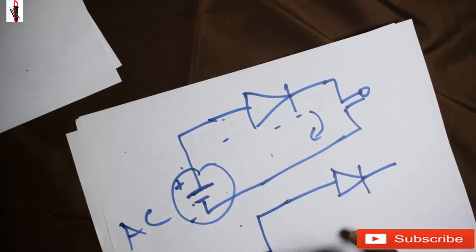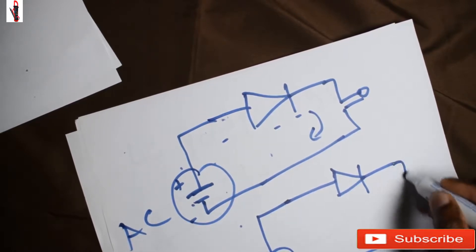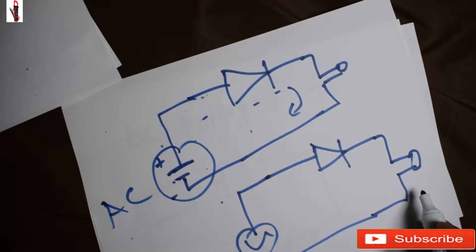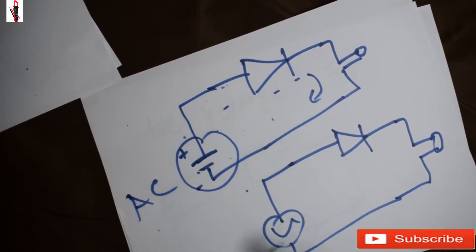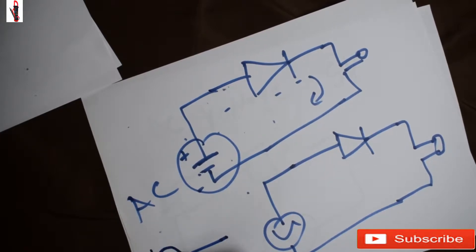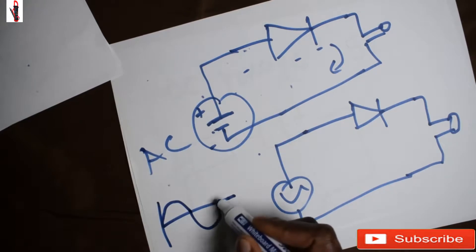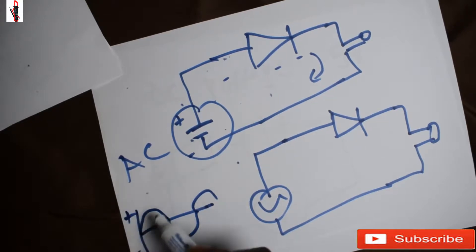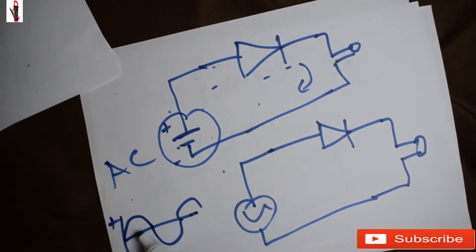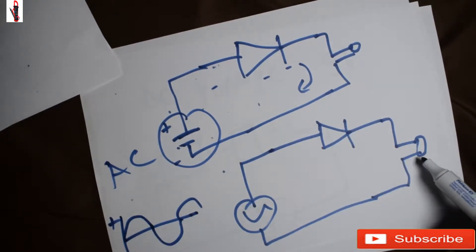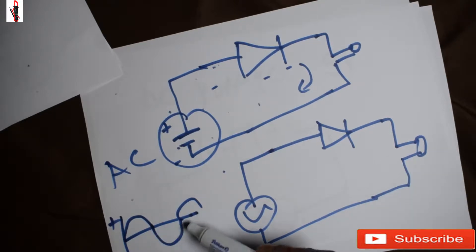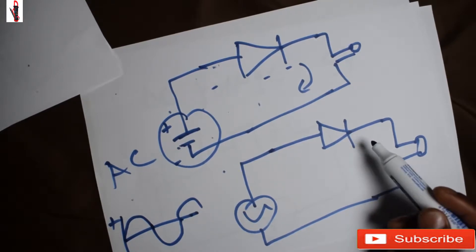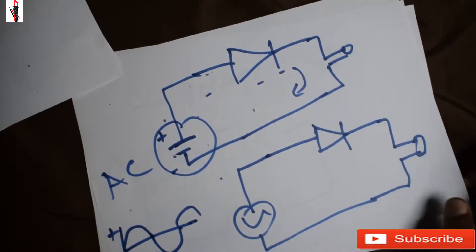This is still our diode, and here we have our small load. This is now AC. From our sine wave, AC will cycle — negative, positive, negative, positive. During the positive cycle our light will glow, but during the negative cycle it won't, because the diode doesn't allow current in reverse. So this circuit will be open.